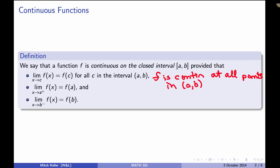And then at the endpoints, because a closed interval [a,b] means that we include the endpoint a and the endpoint b, we need the limit as x approaches a from the right of f(x) to be f(a). We often call this continuous from the right at a, because we don't even know if f is defined for numbers less than a.